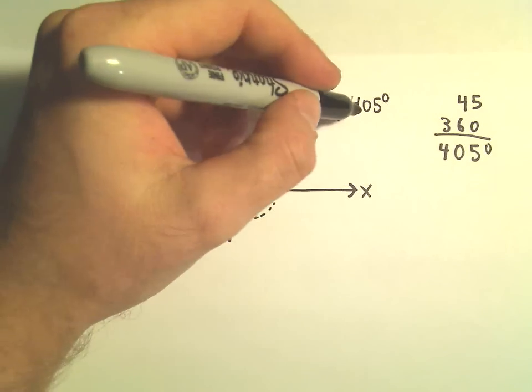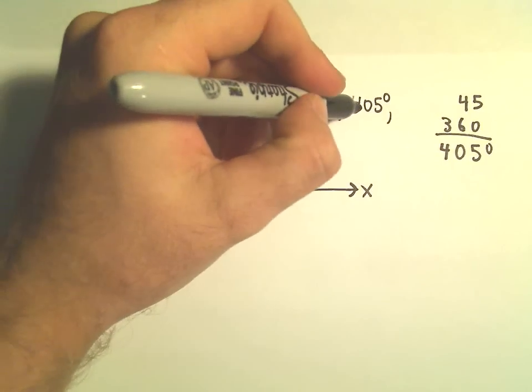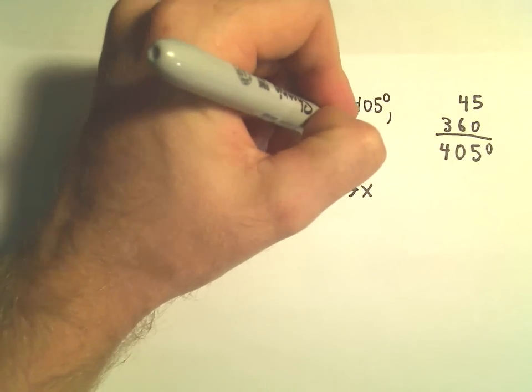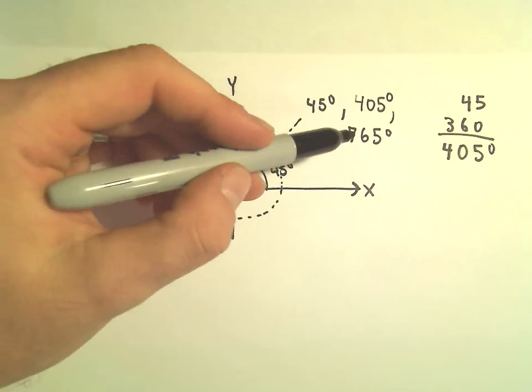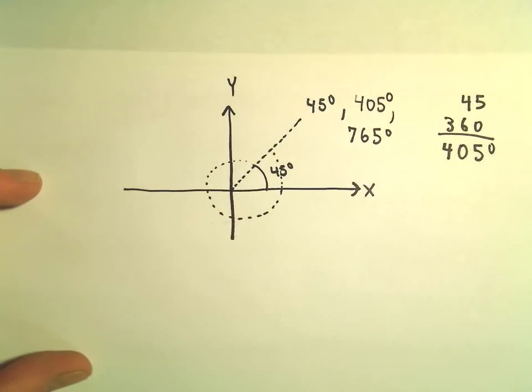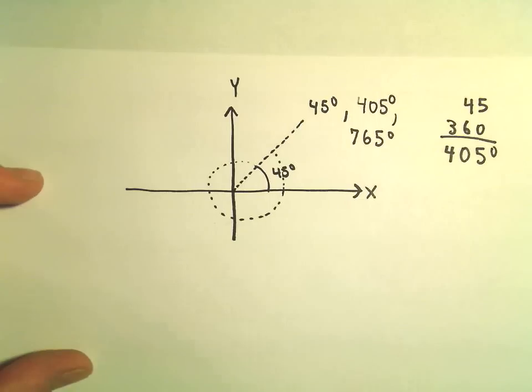Likewise, we could add another 360. If we had another 360, we're going to get 765 degrees. 45 degrees, 405 degrees, 765 degrees - those are all coterminal.